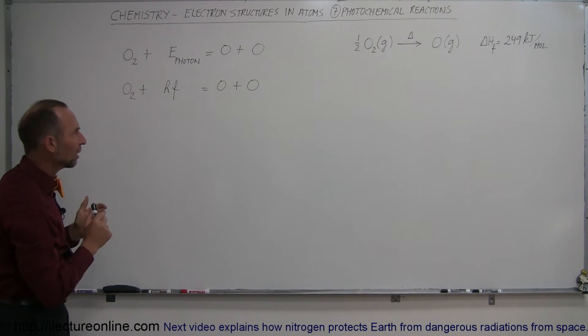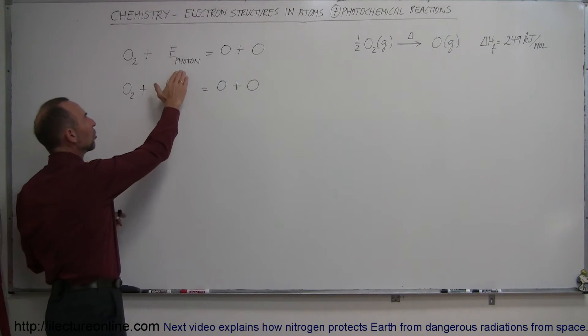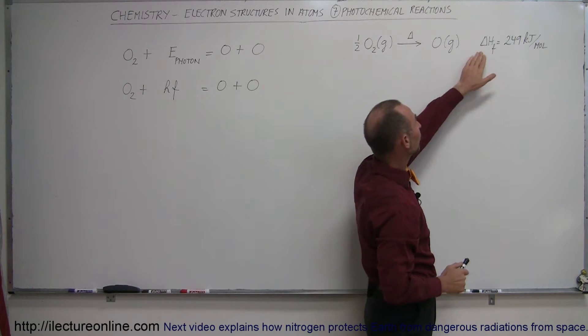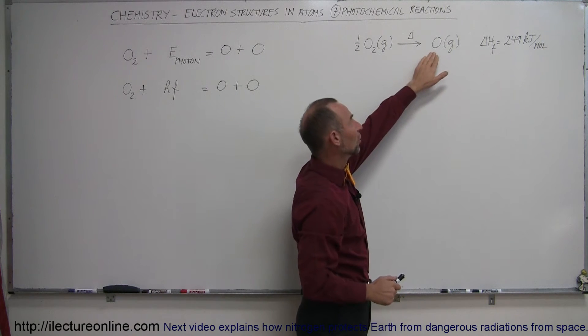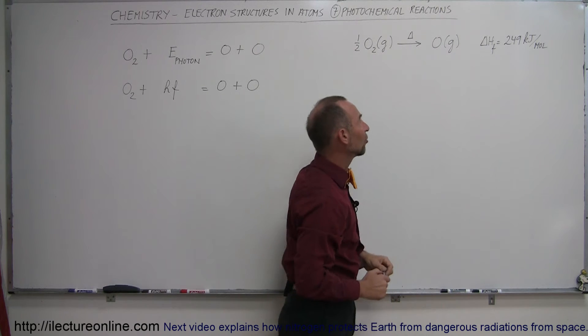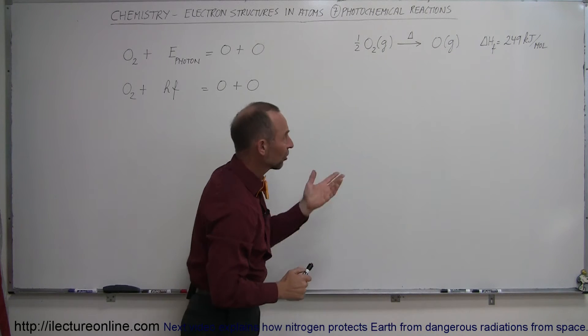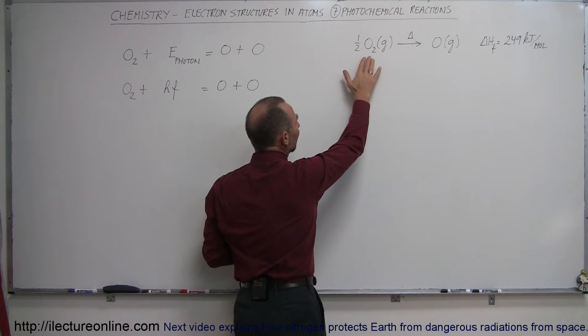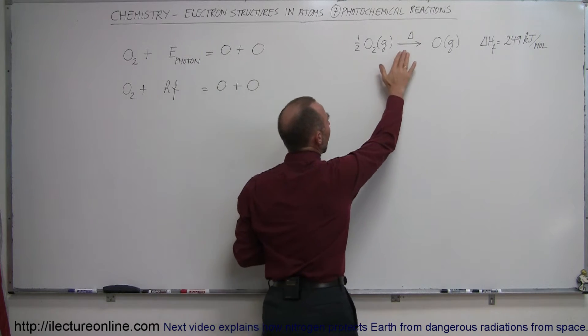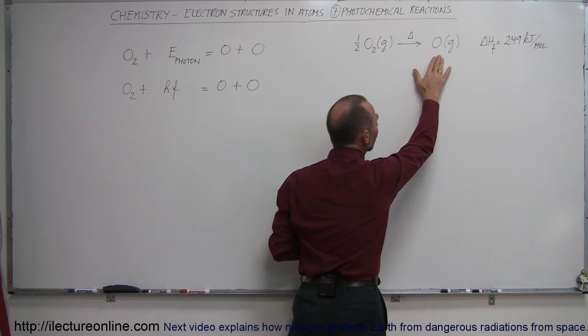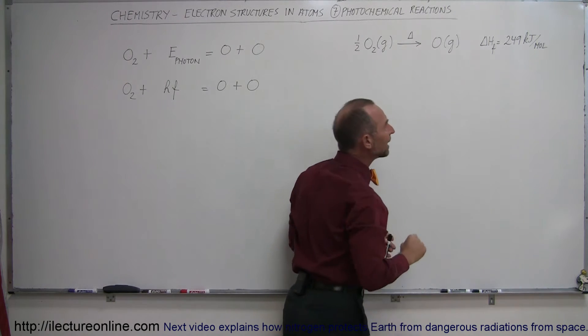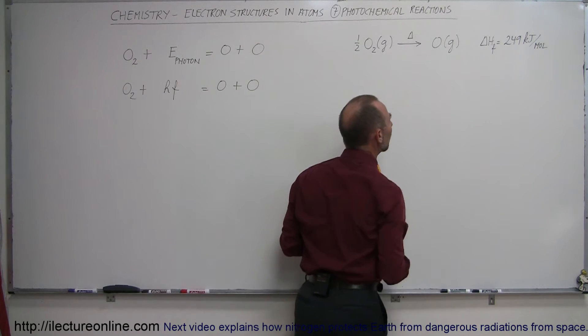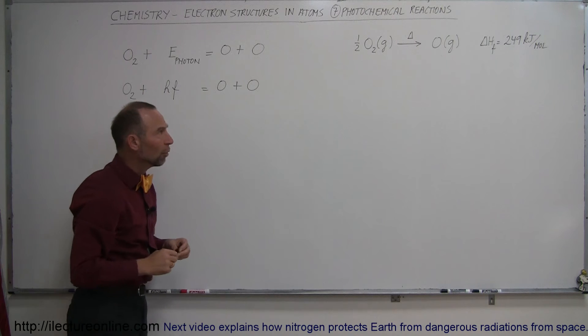Now let's understand a little bit more about what that energy would have to be. First of all, let's take a look at the formation, the enthalpy of formation of oxygen gas in its simple state as a single oxygen atom. Take a standard oxygen molecule and if you have a half a mole of this and you add some energy to it, you can dissociate it, but that will require 249 kilojoules per mole of oxygen gas, single atom oxygen gas that is formed.